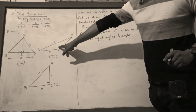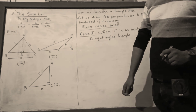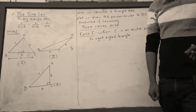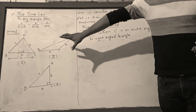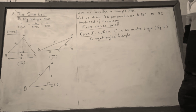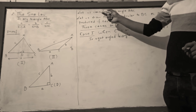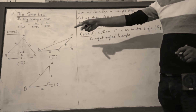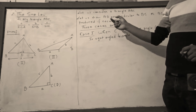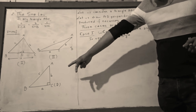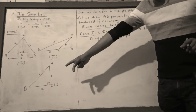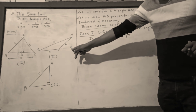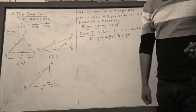If angle C is obtuse angle, then the second case arises. Let us consider triangle ABC and draw AD perpendicular to BC, or BC produced if necessary. In the first and third figures, BC is not necessary to produce, but in the second figure it is necessary to produce BC to draw perpendicular AD to BC.